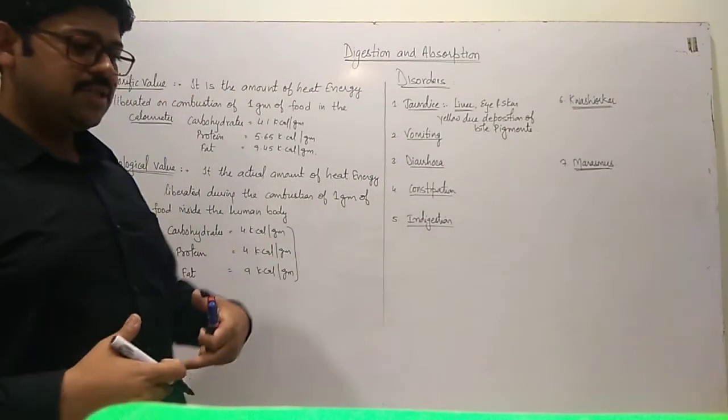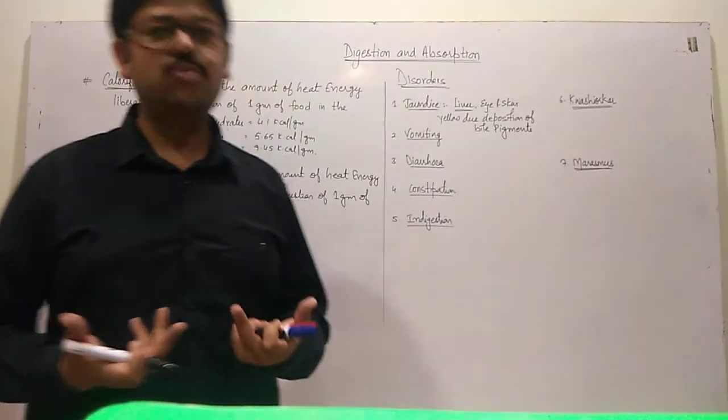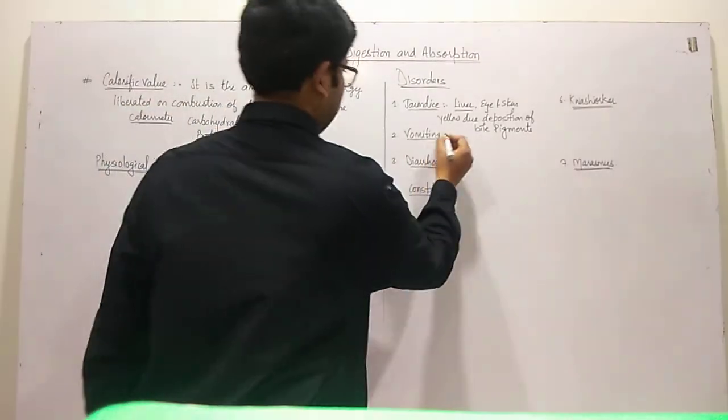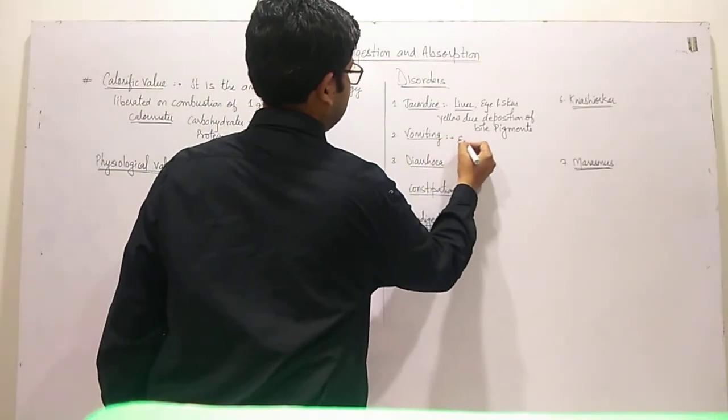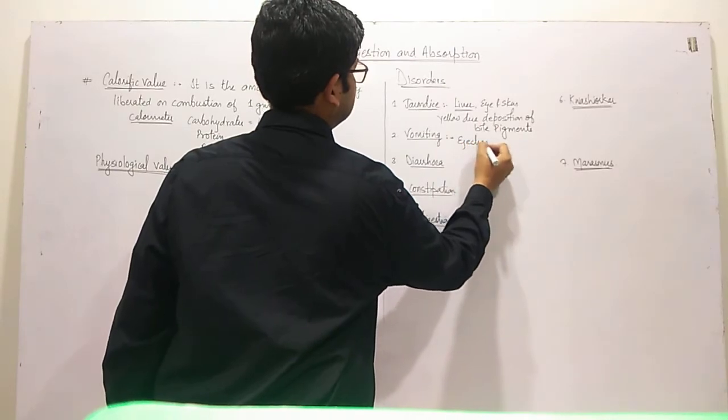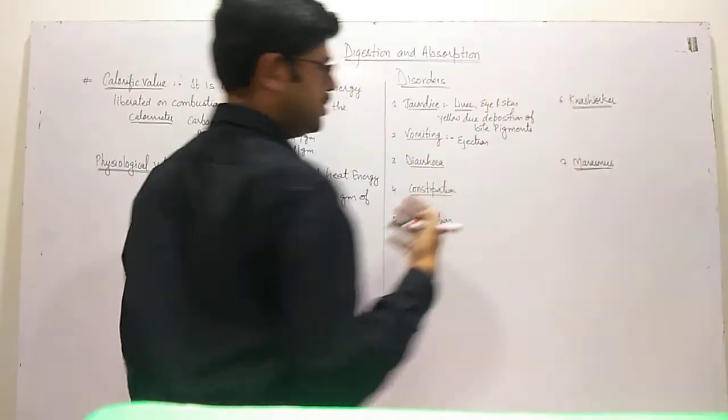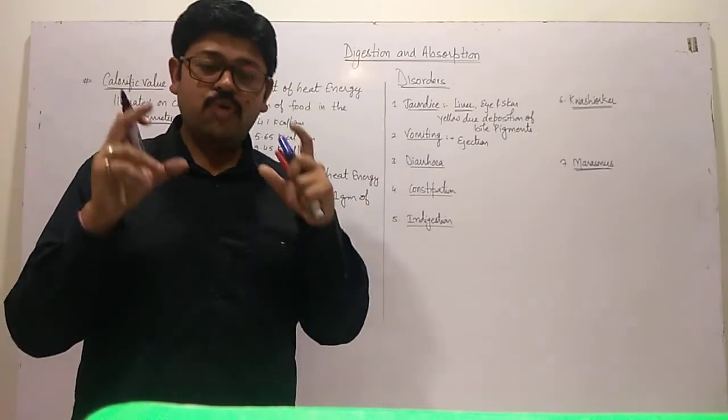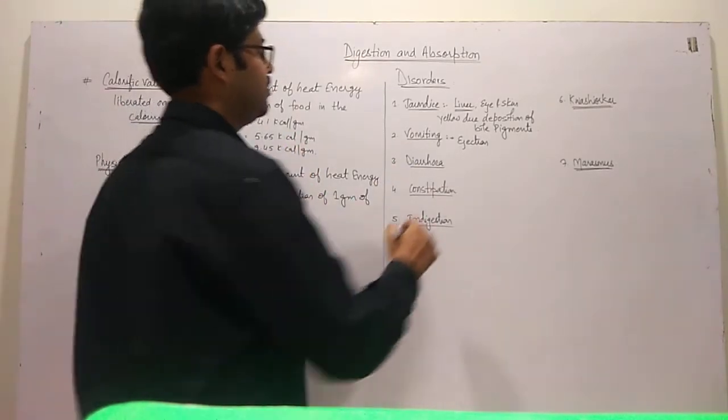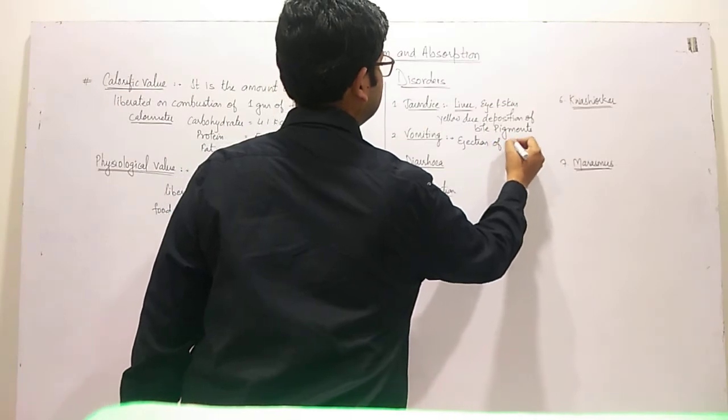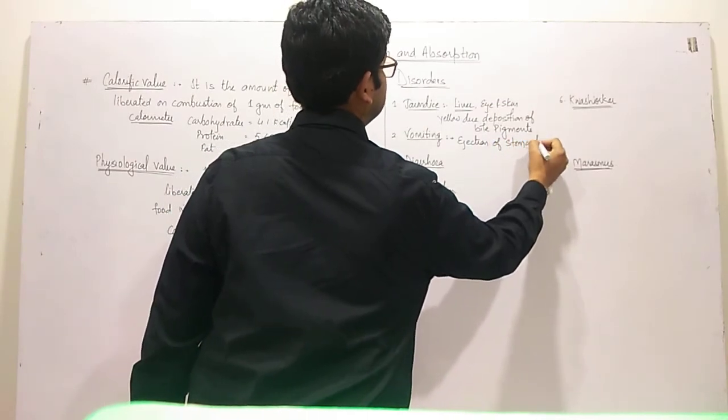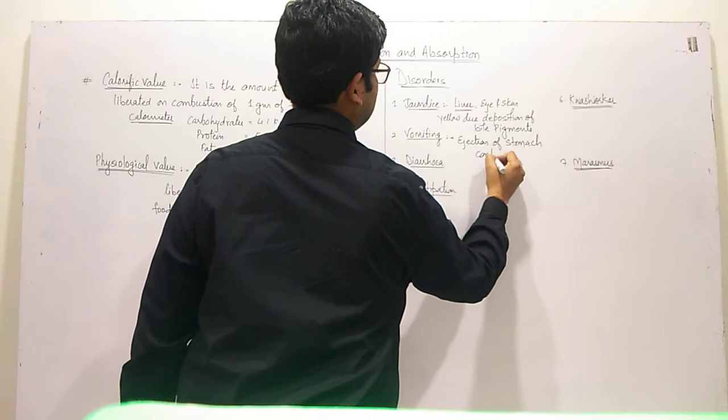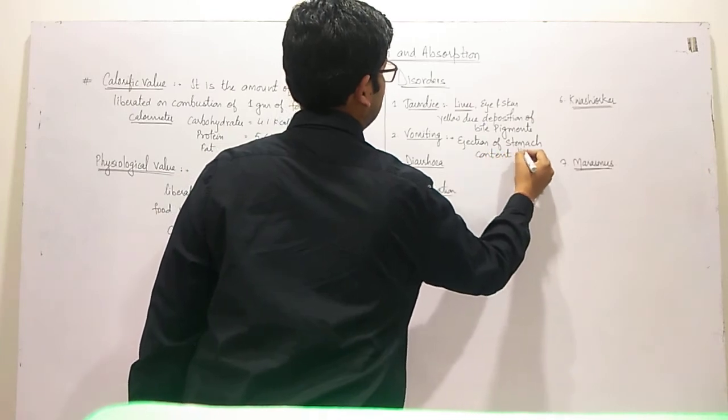Vomiting is ejection of stomach content through mouth. The vomiting center is located in the medulla oblongata.